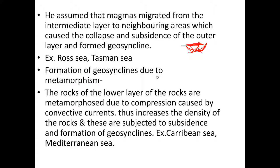The second type is formation of geosynclines due to metamorphism. Rocks in the lower layer are metamorphosed due to compression caused by convective currents. As depth increases inside the Earth, compression and temperature convert rocks to metamorphic rocks. This increases the density of the rocks, subjecting them to subsidence and forming geosynclines. Examples: the Caribbean Sea and the Mediterranean Sea.